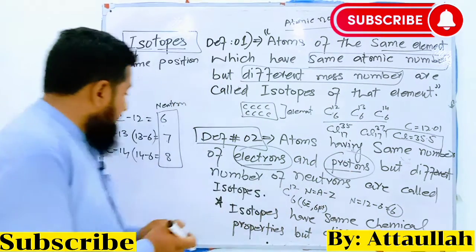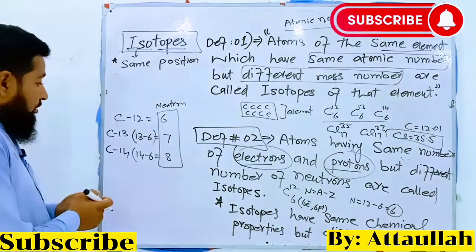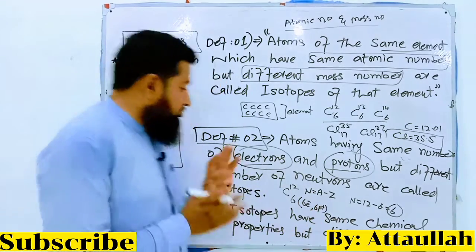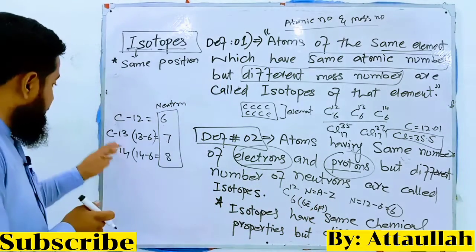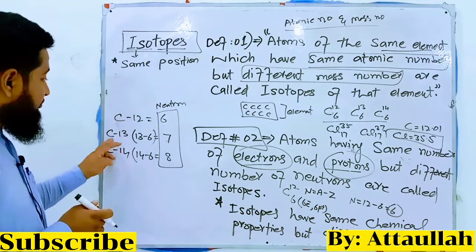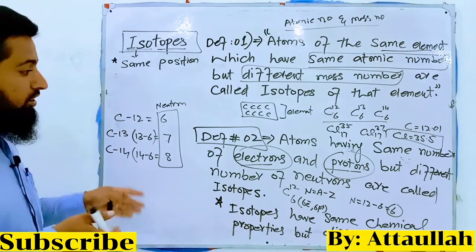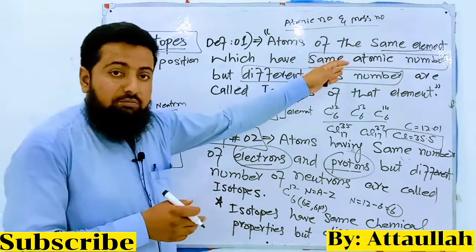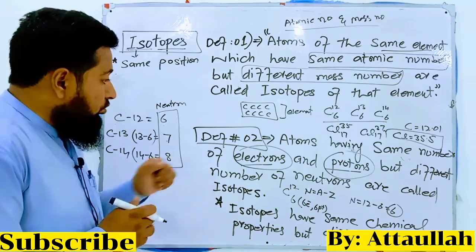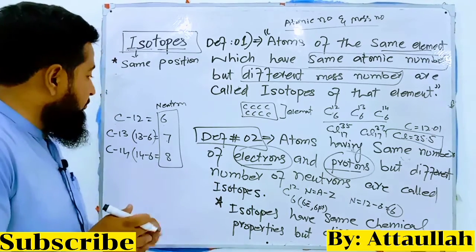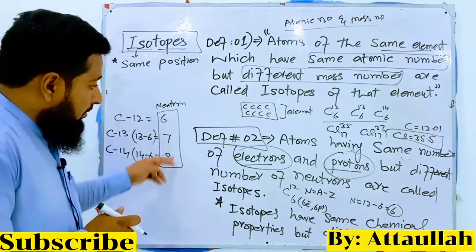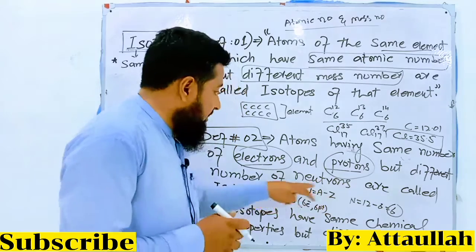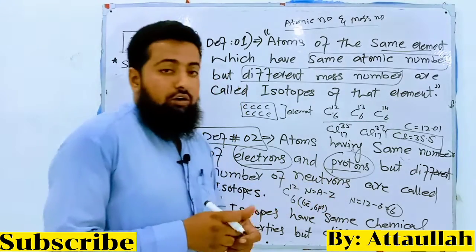Electrons and protons are the same for all carbon isotopes — 6 electrons and 6 protons. The atomic number is the same. If you want to see the number of neutrons, they are different across isotopes.